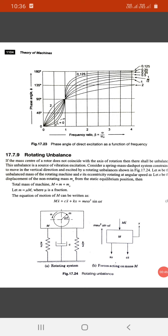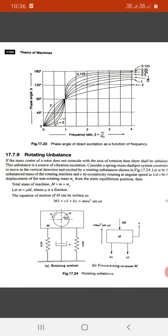Consider a spring-mass dashpot system constrained to move in vertical direction, excited by rotating unbalance as shown in Figure 17.24. Let m be the unbalanced mass of the rotating machine.